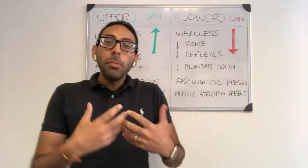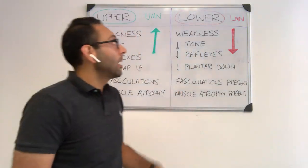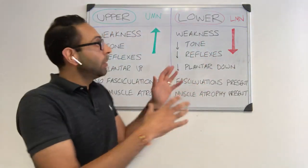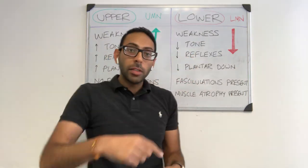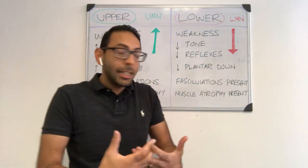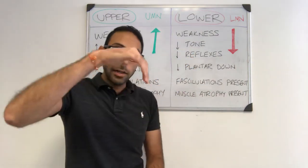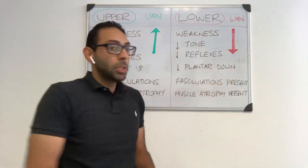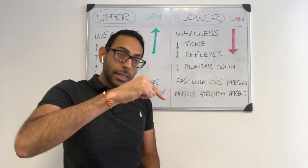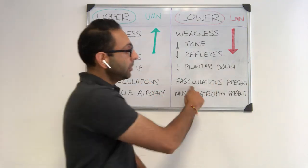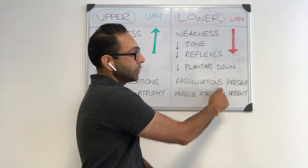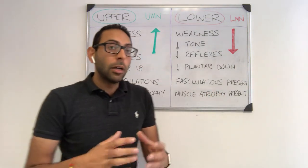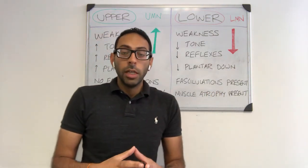With lower motor neurone lesions, think of a red arrow going down. Weakness is present just like in upper motor neurone, but your tone is down — so you get flaccidity. Your reflexes are low. Your Babinski is down, so your toe goes down. You do have fasciculations present and you do get muscle atrophy in a lower motor neurone lesion.